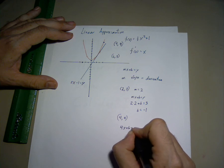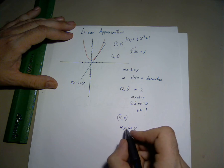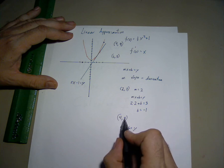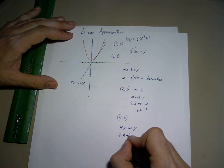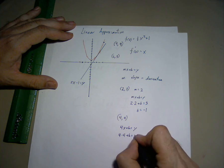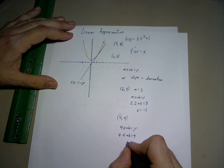4x plus b equals y. At the point (4,9), we have 4 times 4 plus b equals 9. Therefore, b equals negative 7.